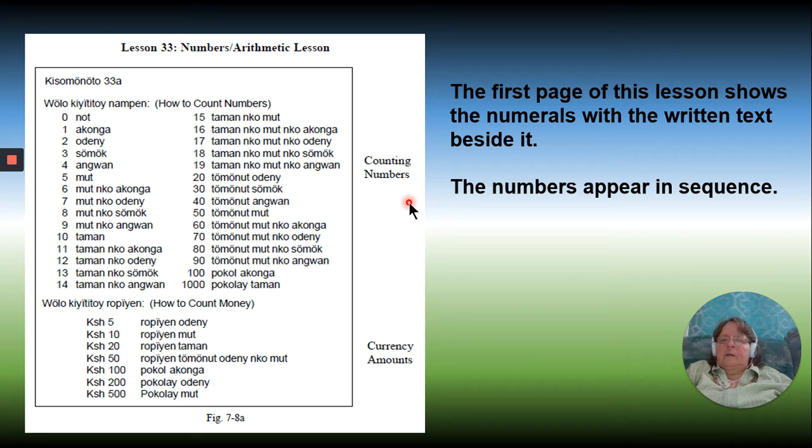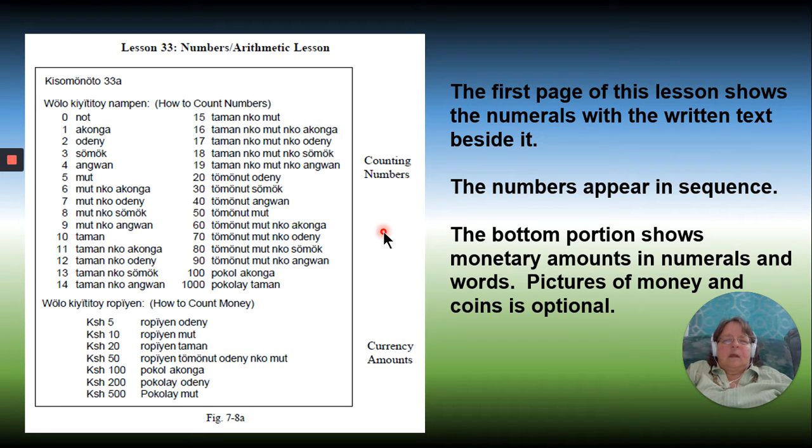The numbers appear in their proper sequence. The bottom portion shows how the money looks. This is Kikongo, so this is Ringgala, Kenya Shilling, and then $5, showing what that would look like to demonstrate how to count the money.